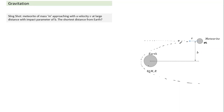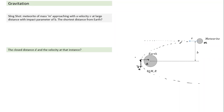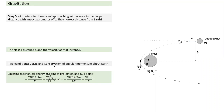Can we calculate the shortest distance from Earth? The shortest distance occurs only when the velocity is tangential. So there are two unknowns at the closest approach: the shortest distance d and the velocity at that instance. Two conditions are needed: conservation of mechanical energy and conservation of angular momentum. These two equations give us d and the velocity at closest approach.